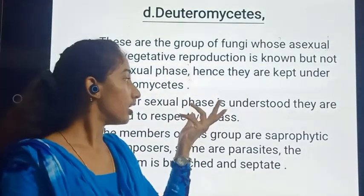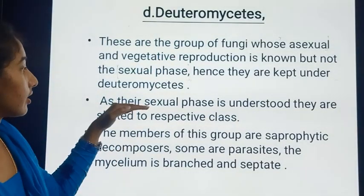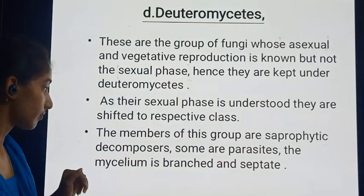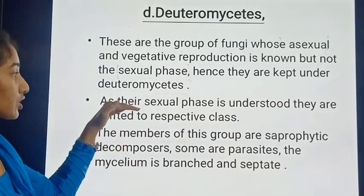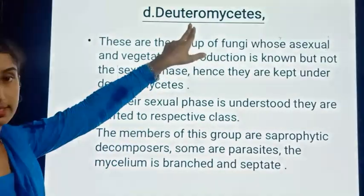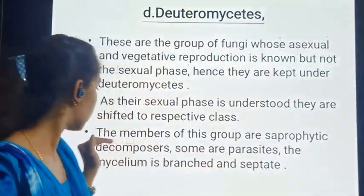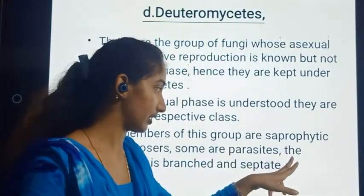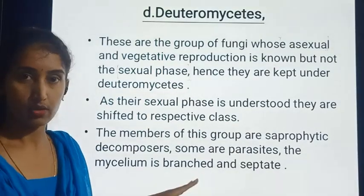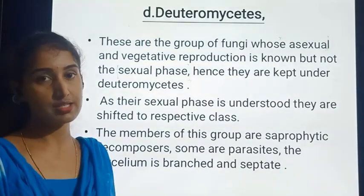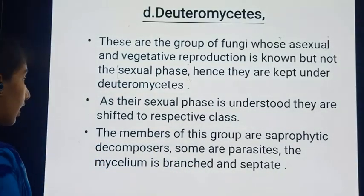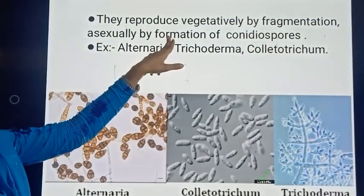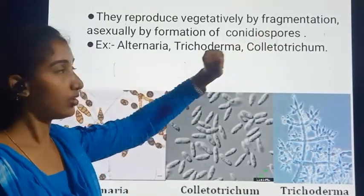If in further study we obtain information regarding their sexual phases, they can be classified under the remaining upper classes. Until then, members whose sexual phases are not known remain under Deuteromycetes. The members are saprophytic, decomposers, and some are parasites. The mycelium is branched and septate — cross walls are present in the hyphae — and they reproduce vegetatively by fragmentation and asexually by formation of conidia.